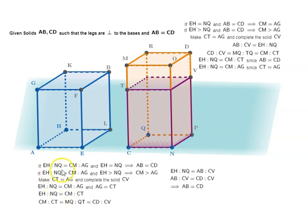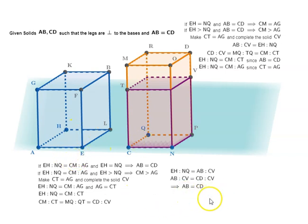So we have shown that if two parallelopipedal solids AB and CD have legs perpendicular to their bases and AB equals CD, then their bases are reciprocally proportional to their heights, and vice versa. This was the case when the legs were perpendicular.